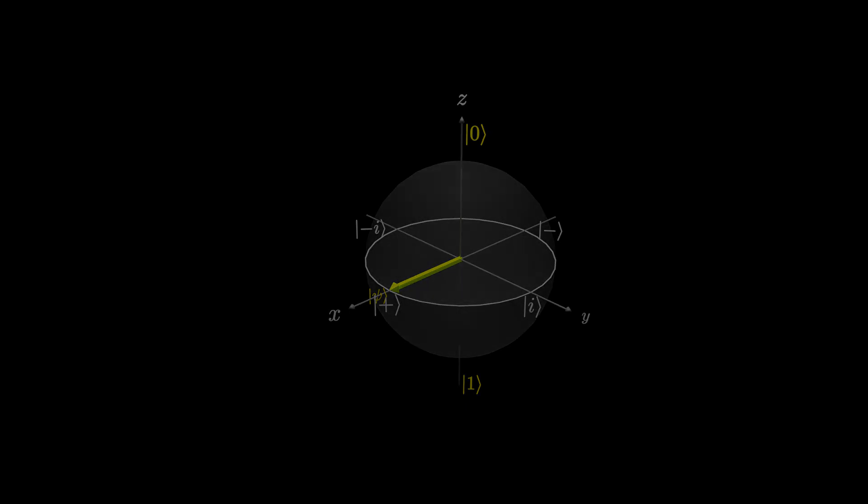To represent phase, we have to bring back our old friend, complex numbers. In quantum computing, we mostly use complex numbers in exponential form. You will now see why. But first, let's consider some states in the Bloch sphere.